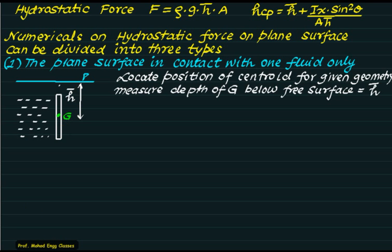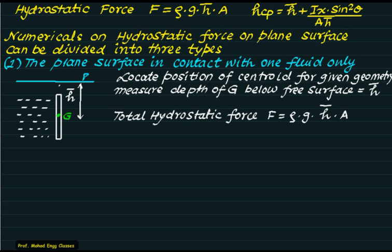This type of problem is very straightforward. The hydrostatic force is simply given by the product of density multiplied by g multiplied by h-bar multiplied by area. The only skill required is to calculate the value of h-bar to find the hydrostatic force on the plane surface.